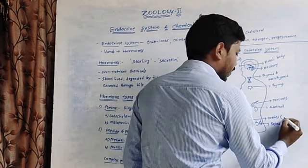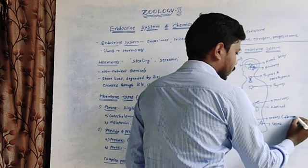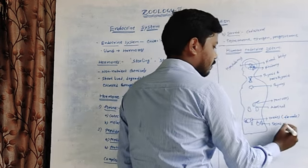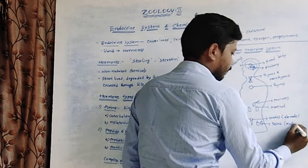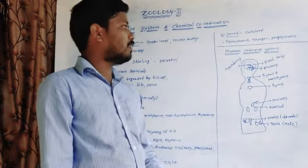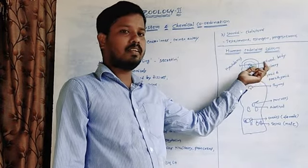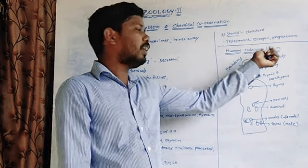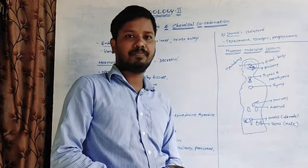It also includes ovaries in females and testes in males. These are the glands included in the human endocrine system.